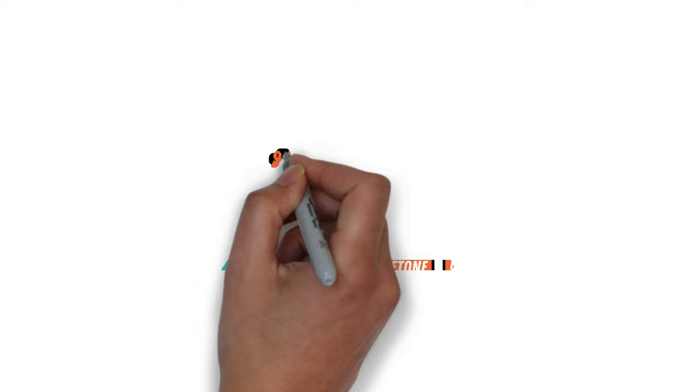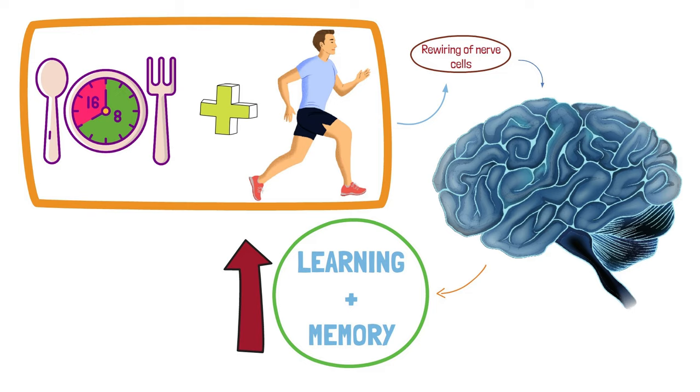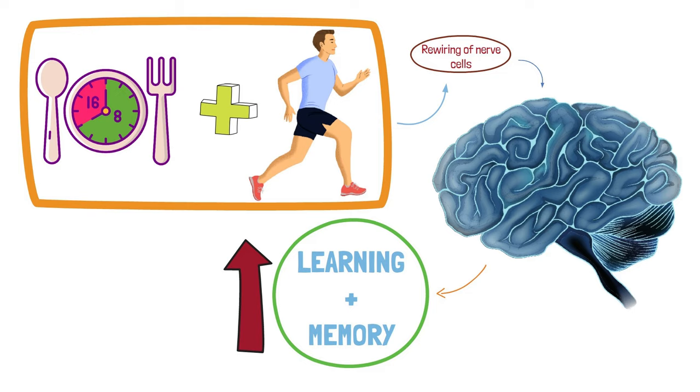You can help accelerate ketone production with some heart-pumping exercise. For example, intermittent fasting combined with running causes rewiring of nerve cells in the brain, which leads to improved learning and memory in lab animals.